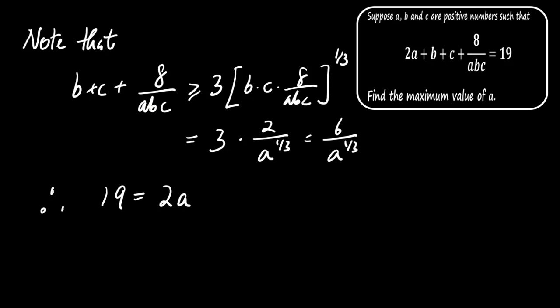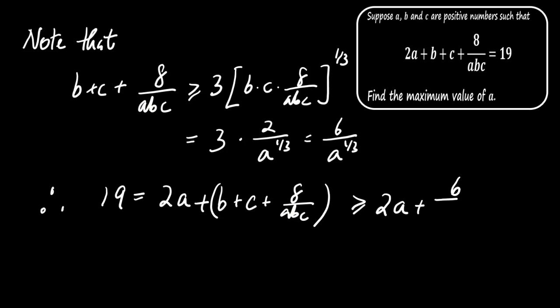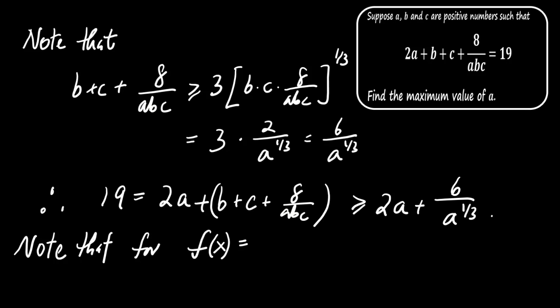Next, using the original equation 2A + B + C + 8/(ABC) = 19, we substitute the expression for B + C + 8/(ABC). This leads us to 19 ≥ 2A + 6 divided by the cube root of A. Now we define a function f(x), where f(x) = 2x + 6 divided by the cube root of x.